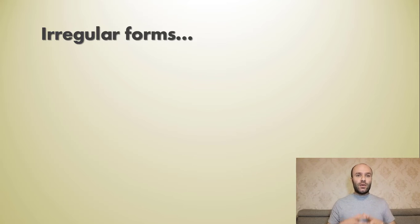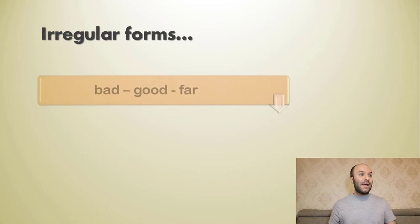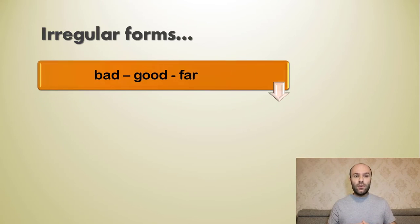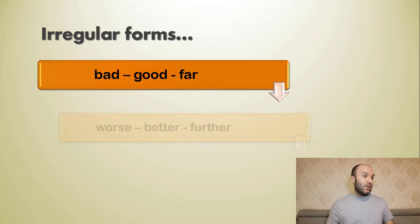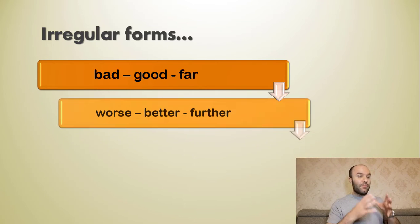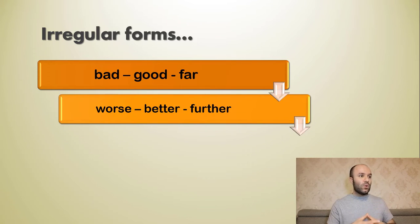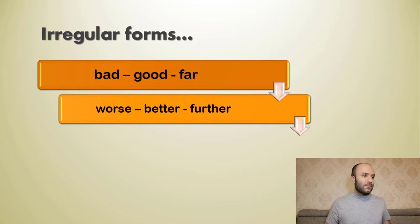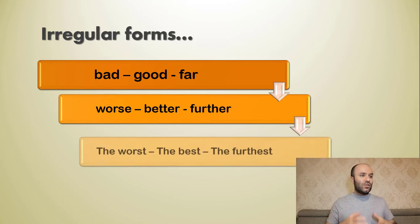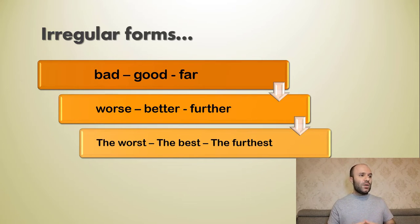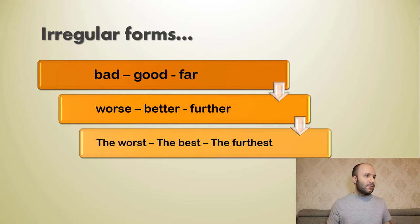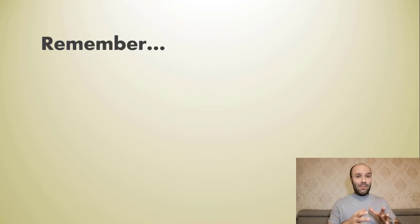We also have irregular forms. For 'bad', 'good', and 'far': the comparative forms are 'worse', 'better', and 'further', and the superlative forms are 'the worst', 'the best', and 'the furthest'. Remember these!